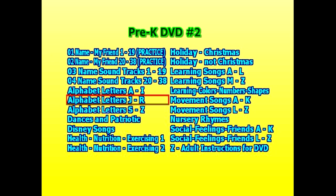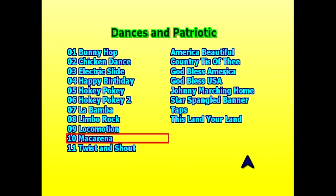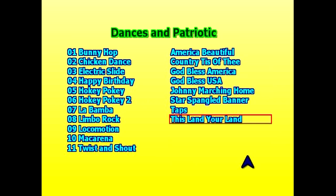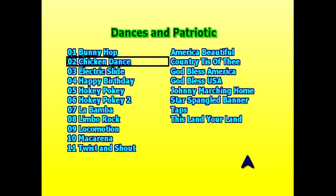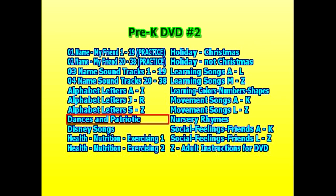The next folder has alphabet letters A to I, J to R, and S to Z — there's a song about each letter of the alphabet, two songs in most cases. Then we have dances and patriotic songs. There's a lot of different dance songs on the left and patriotic songs on the right. For instance, if the children request to do the chicken dance, click on the chicken dance song and it will begin to play — all the children and you can dance together.